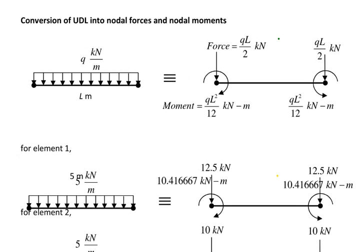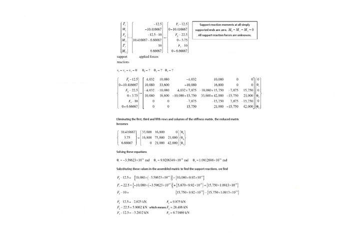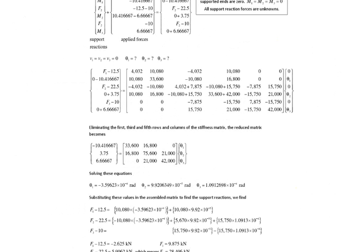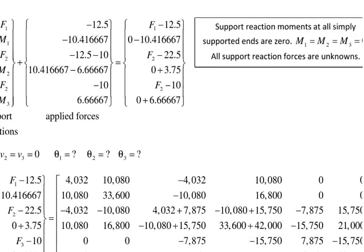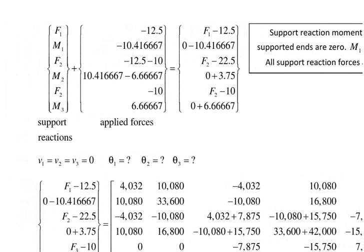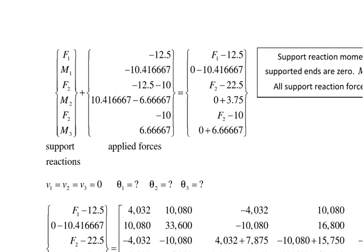Now make the global stiffness matrix K. First calculate the force matrix. Force entries are F1, M1, F2, M2, F3, M3 for nodes 1, 2, and 3, which include the support reactions plus the applied forces. In all three cases, forces act downward, so they are taken as negative, giving minus 12.5 at node 1.